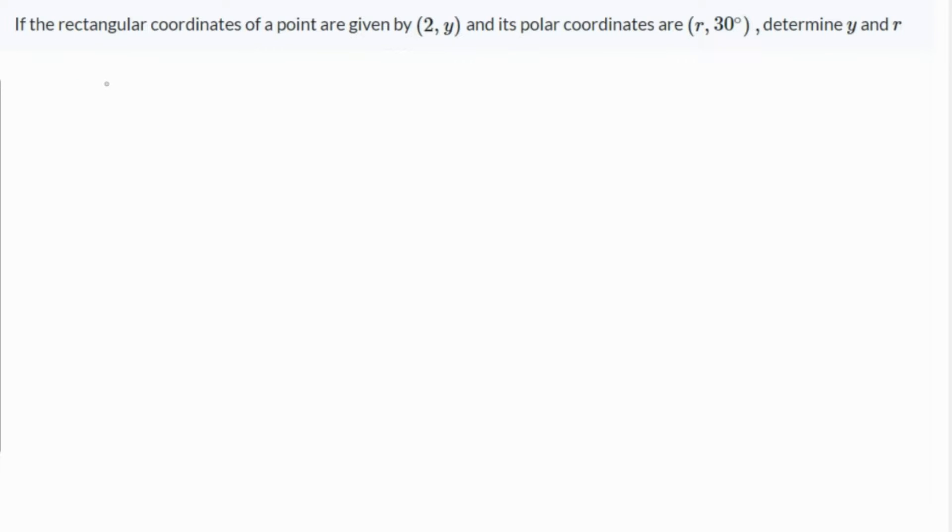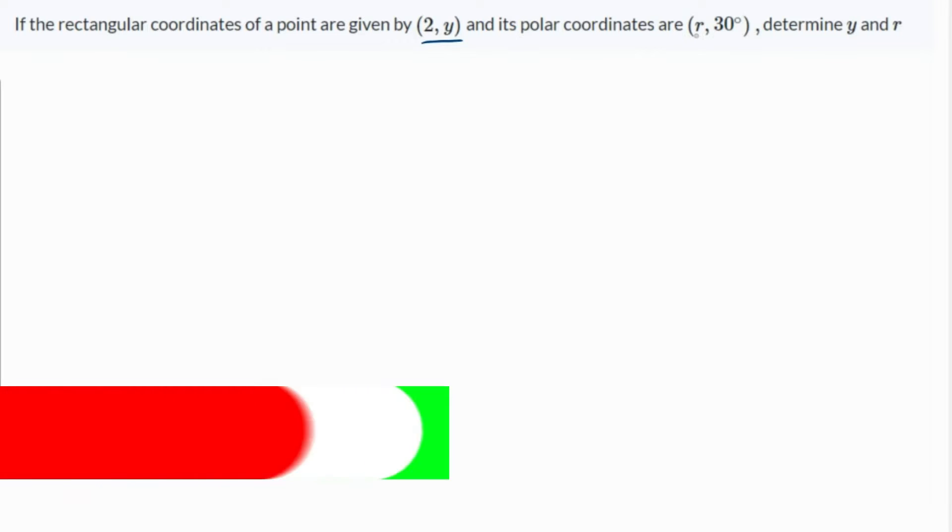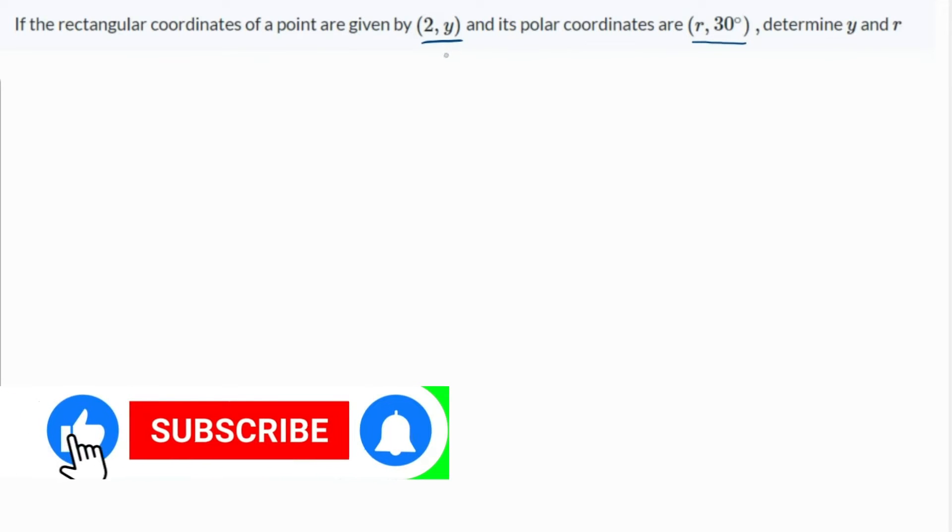Let's talk about this question. If the rectangular coordinates of a point are given by (2, y) and its polar coordinates are (r, 30°), what is the value of y and r?